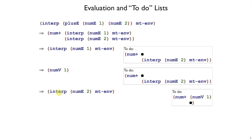That is, we continue interpreting num e2, eventually get a num v2, at that point plate will consult the to-do list, which says put it back together as num plus num v1 num v2, and then actually perform the addition.